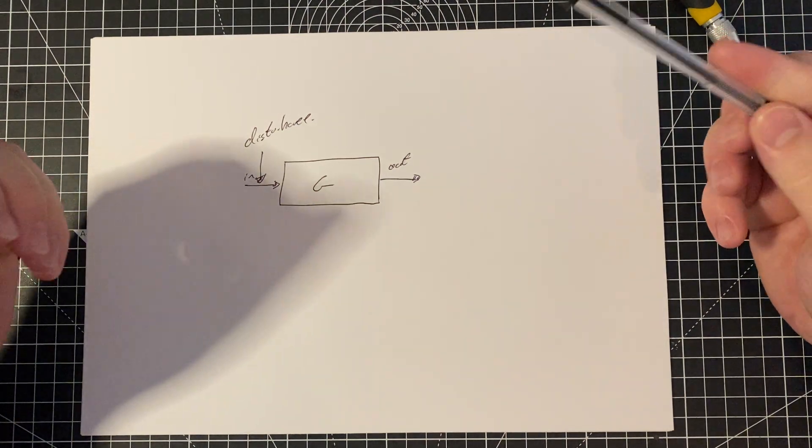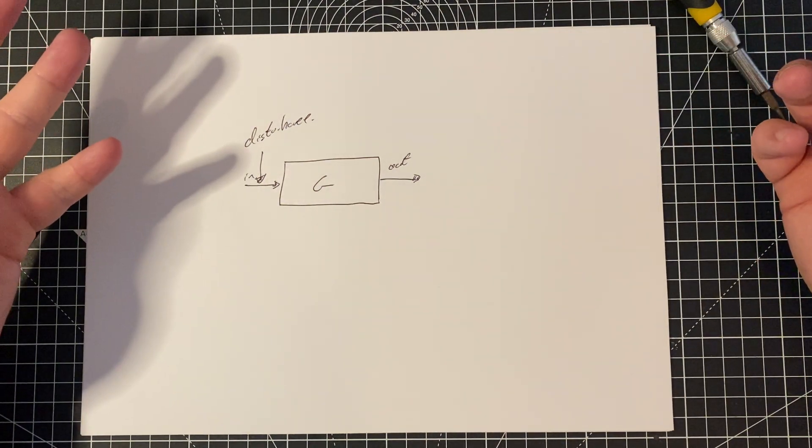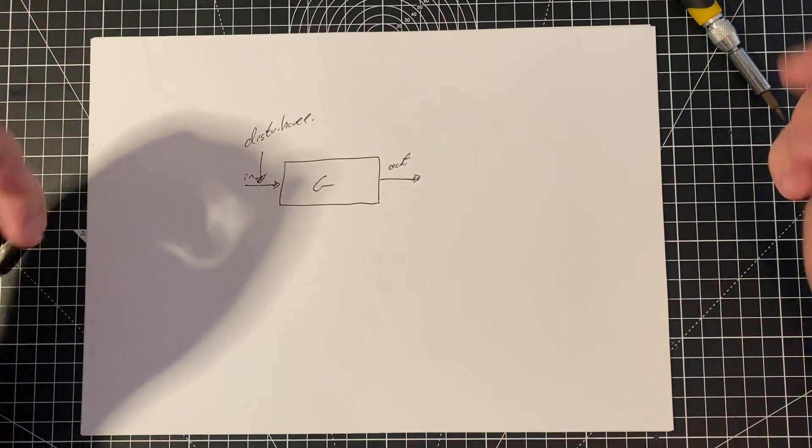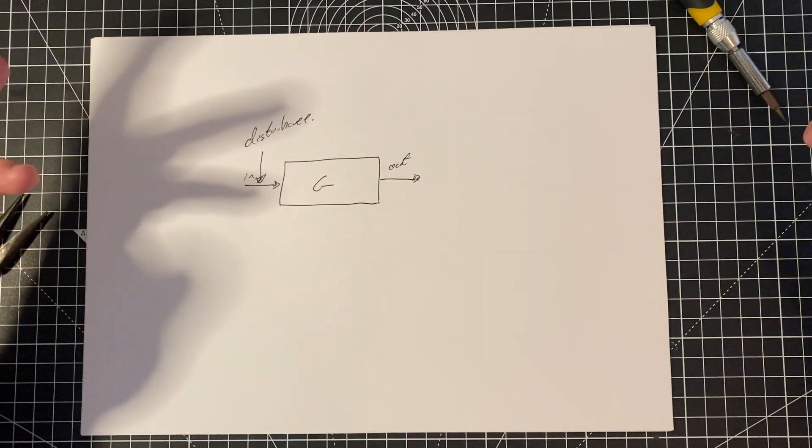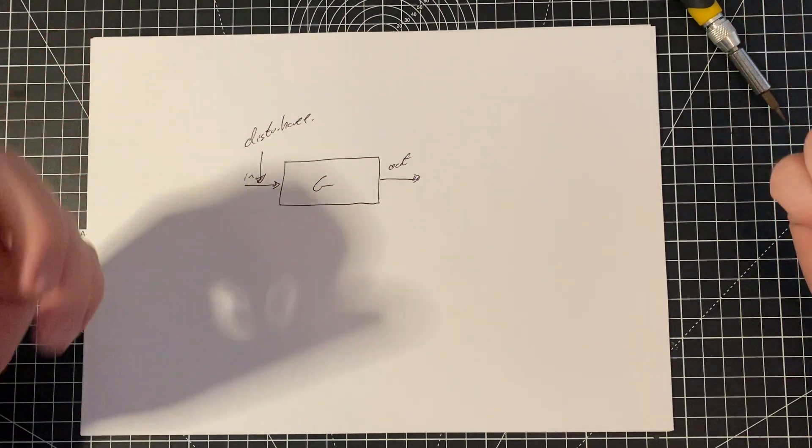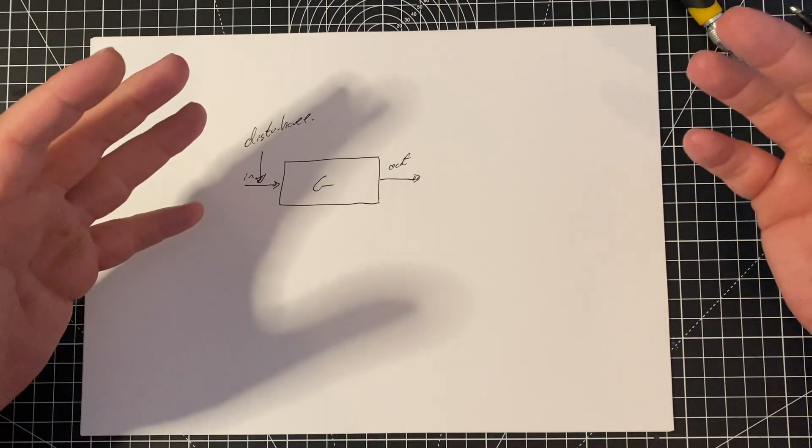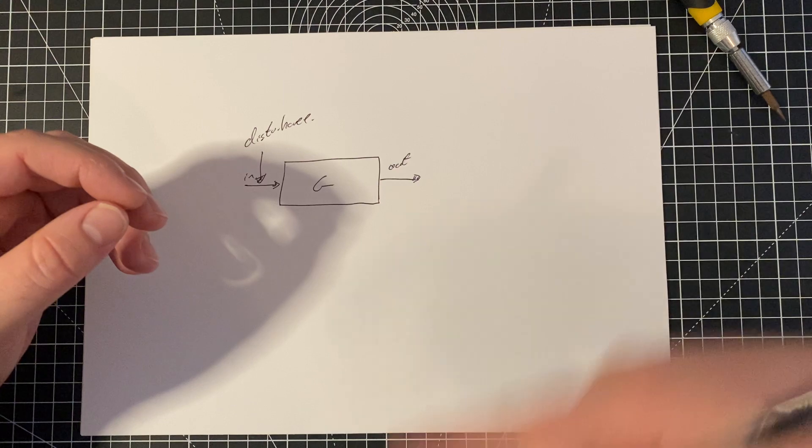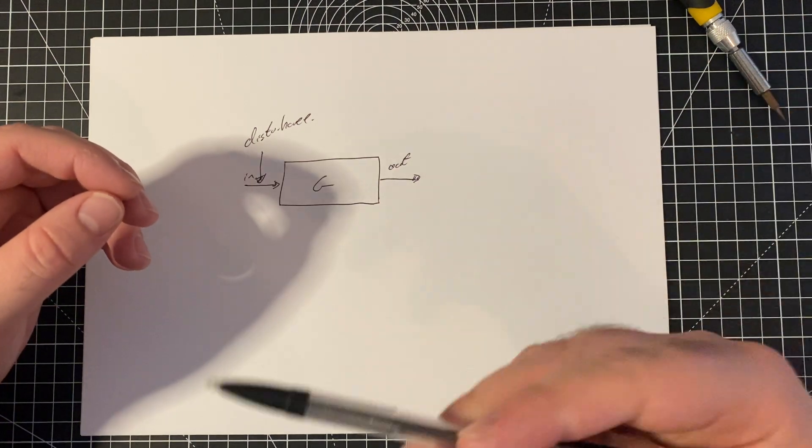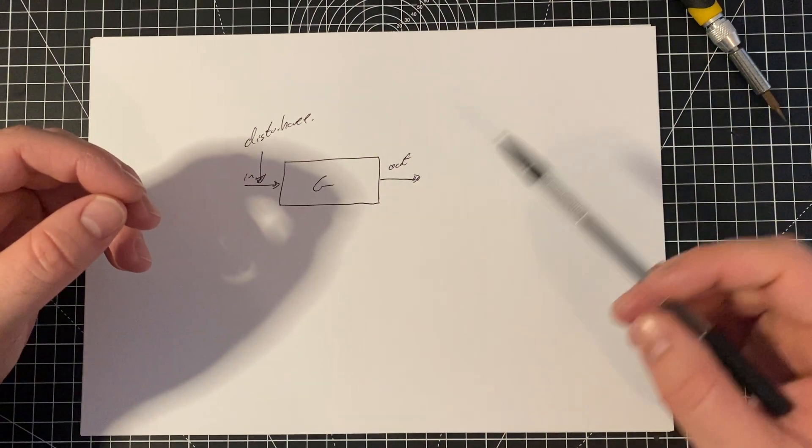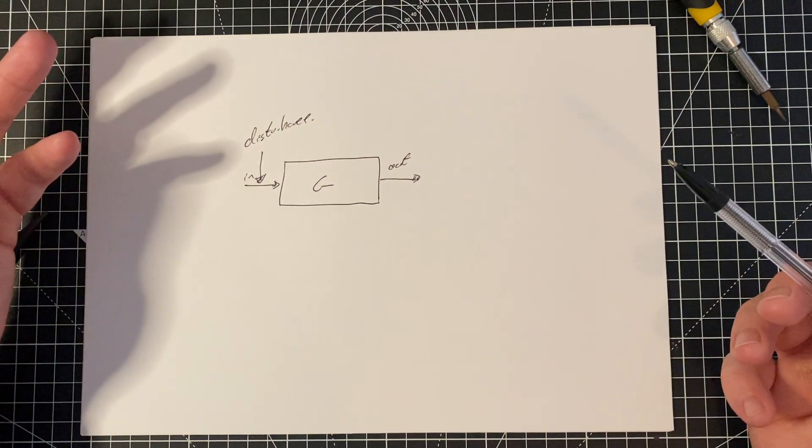So, our system, the pendulum system, is basically, it's what we would call a stable system, like, on its own. So, that means that it doesn't really matter what disturbance you give it or anything like that. So, it doesn't matter how hard I hit the pendulum, it'll just swing away, and then it'll basically come back to its zero point on its own.